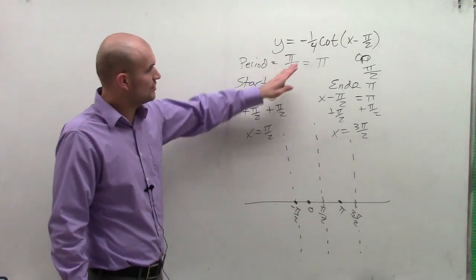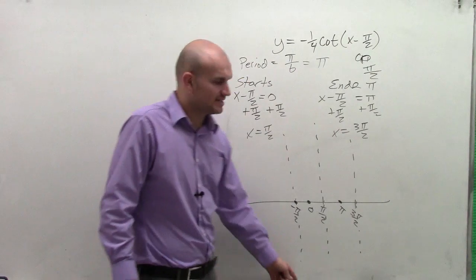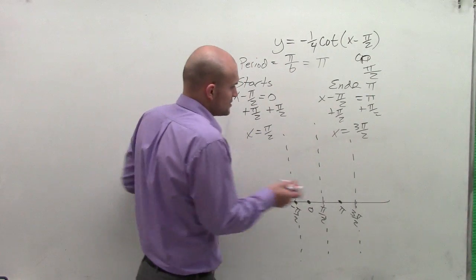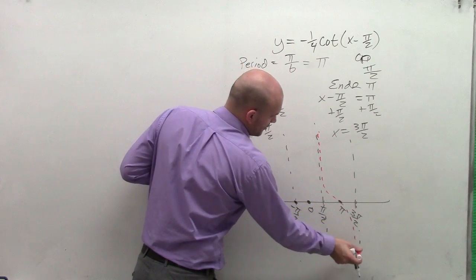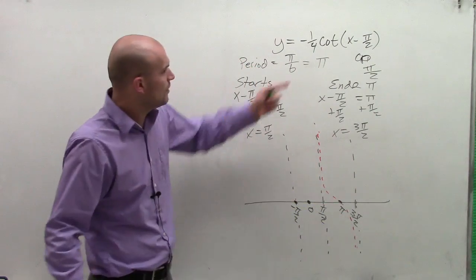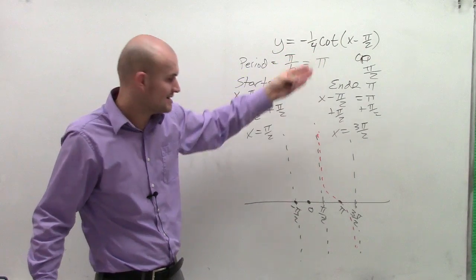For this one, though, let's just go and look at what the initial graph would look like without a reflection. So if I was going to graph my period, it'd probably look something like this. It's going to be a little bit more stretched. But what we notice is I'm going to have a reflection over my x-axis.